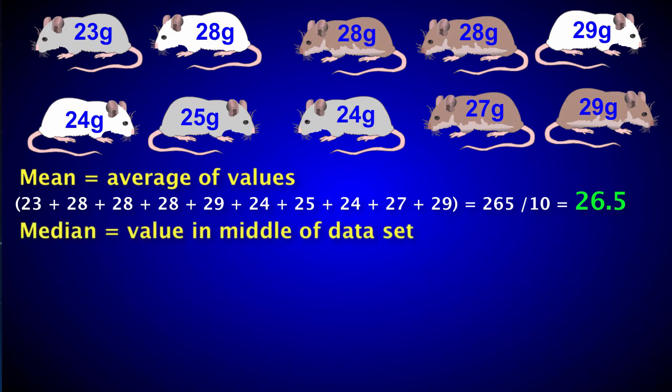The median is the value in the middle of a data set. To find the median, put the values in order from lowest to highest. Then, take the middle number. Or, if you have an even number of data values like you have here, take the middle two numbers and average them. The median for this group is 27.5.